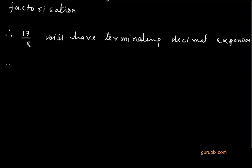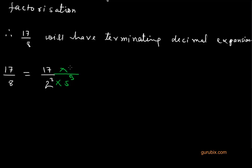Now let us move to the next part of the question. We shall find the decimal expansion of 17 over 8, where the denominator is 2 to the power 3. For getting the decimal expansion of 17 over 2 to the power 3, we shall multiply both the numerator and denominator by 5 to the power 3, because we multiply by 5 with the same power as 2.